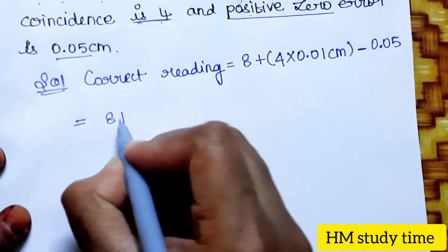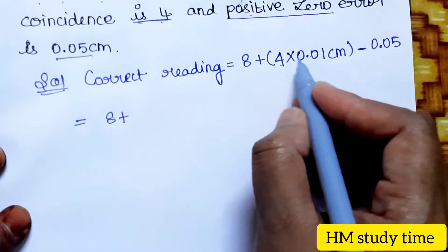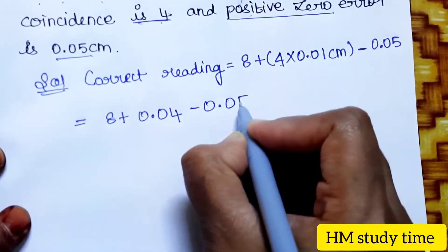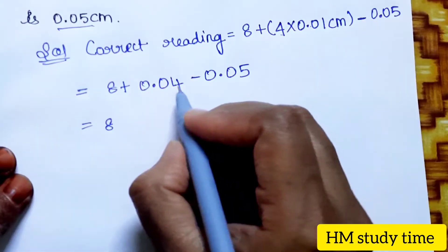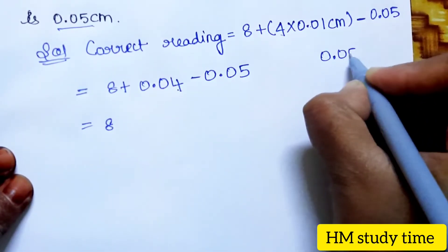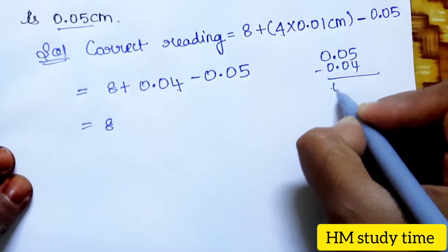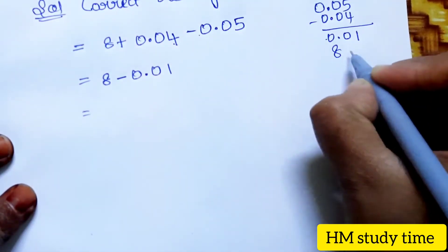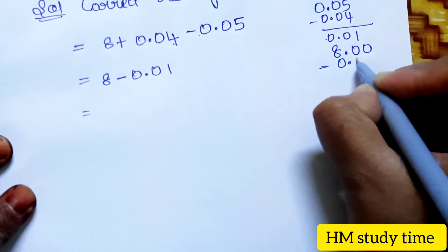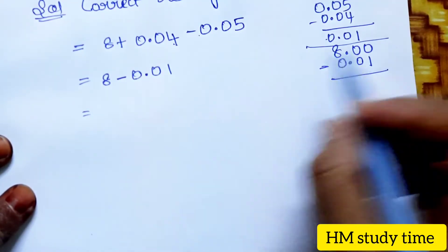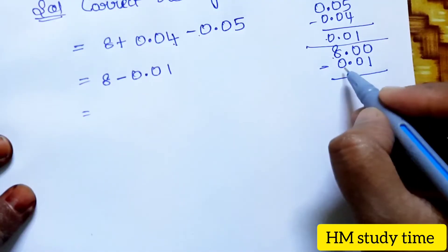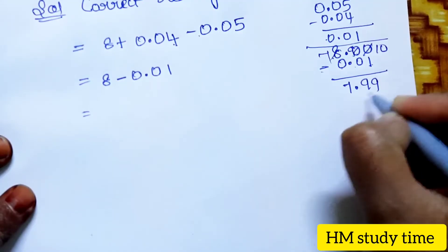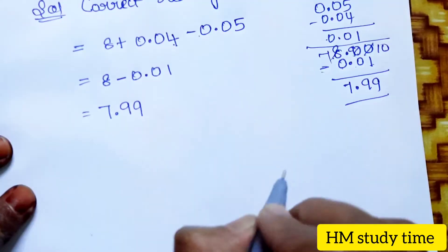Solving the problem: 8 plus 4 into 0.01 equals 8 plus 0.04, minus 0.05. That gives 8.04 minus 0.05. So 0.04 minus 0.05 equals minus 0.01, giving 8.00 minus 0.01. The answer is 7.99 cm. This is the correct reading. Unit: cm.